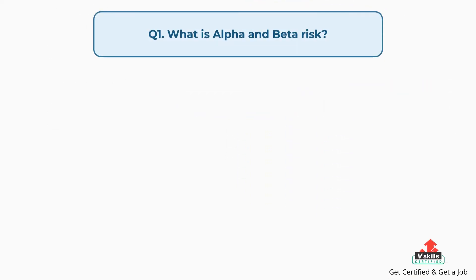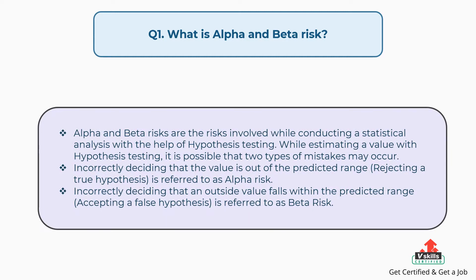Question number one: What is alpha and beta risk? Alpha and beta risks are the risks involved while conducting a statistical analysis with the help of hypothesis testing. While estimating a value with hypothesis testing, two types of mistakes may occur. Incorrectly deciding that the value is out of the predicted range, rejecting a true hypothesis, is referred to as alpha risk. Incorrectly deciding that an outside value falls within the predicted range, accepting a false hypothesis, is referred to as beta risk.